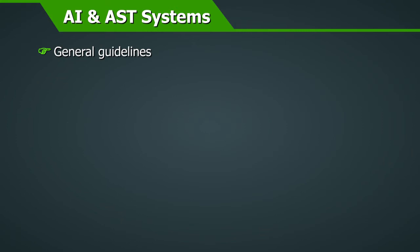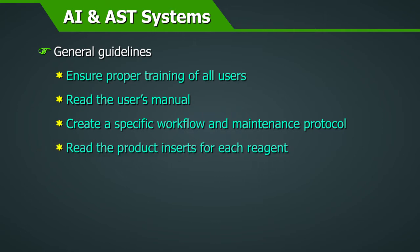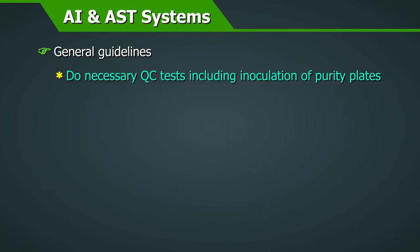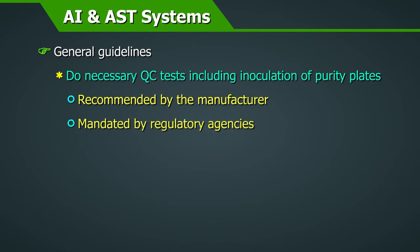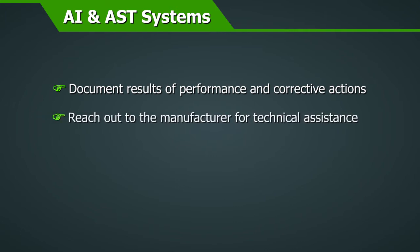General guidelines: Before using an automated instrument, ensure proper training of all users. Read the user manual and create a specific workflow and maintenance protocol for your lab that is aligned to the manufacturer's instructions. Read the product inserts for each reagent and use the reagents appropriately. Do all necessary quality control tests, including inoculation of purity plates, as recommended by the manufacturer and mandated by regulatory agencies. Document results of performance and corrective actions. Reach out to the manufacturer for technical assistance as required.